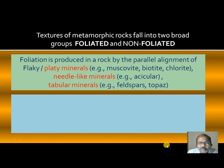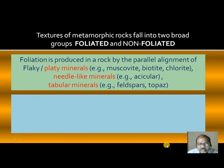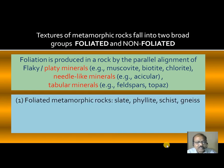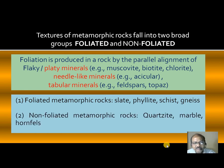Foliation is produced in metamorphic rocks if the mineral grains have a parallel alignment. For example, platy minerals or flaky minerals — muscovite, biotite, chlorite — needle-like minerals, acicular minerals, tabular minerals, feldspar, topaz — if they are arranged parallelly, in such a case we say the rock is exhibiting foliation texture. Foliated texture can be seen in metamorphic rocks such as slate, phyllite, schist, and gneiss. Whereas non-foliated rocks are quartzite, marble, and hornfels — that means there will be no parallel alignment of the minerals present.